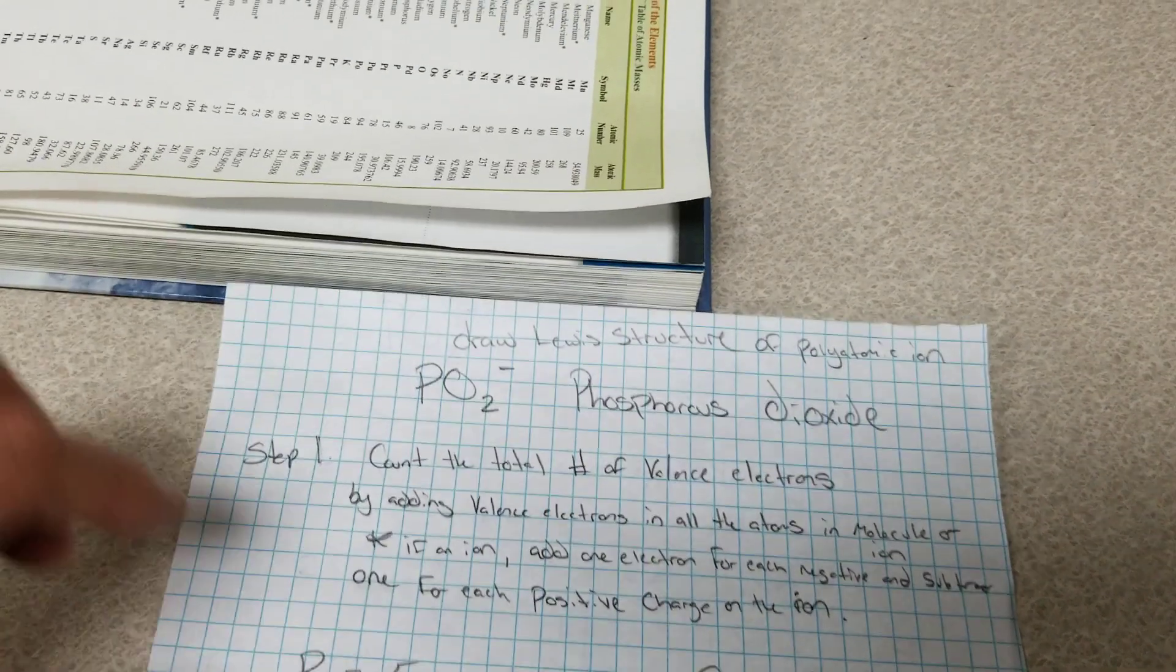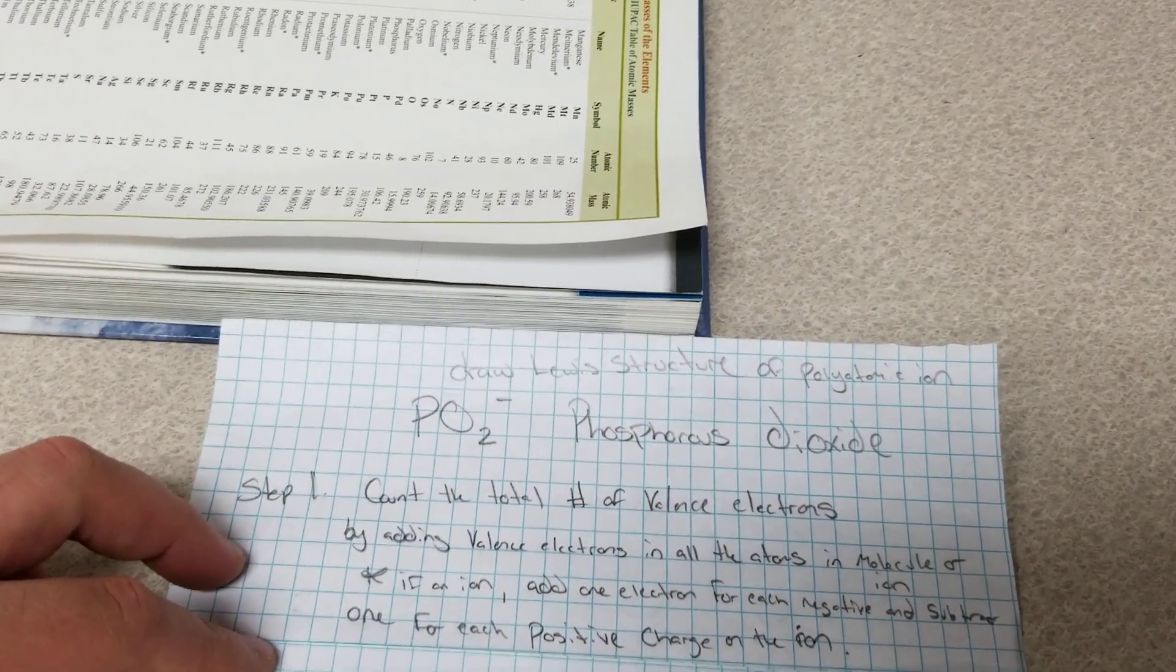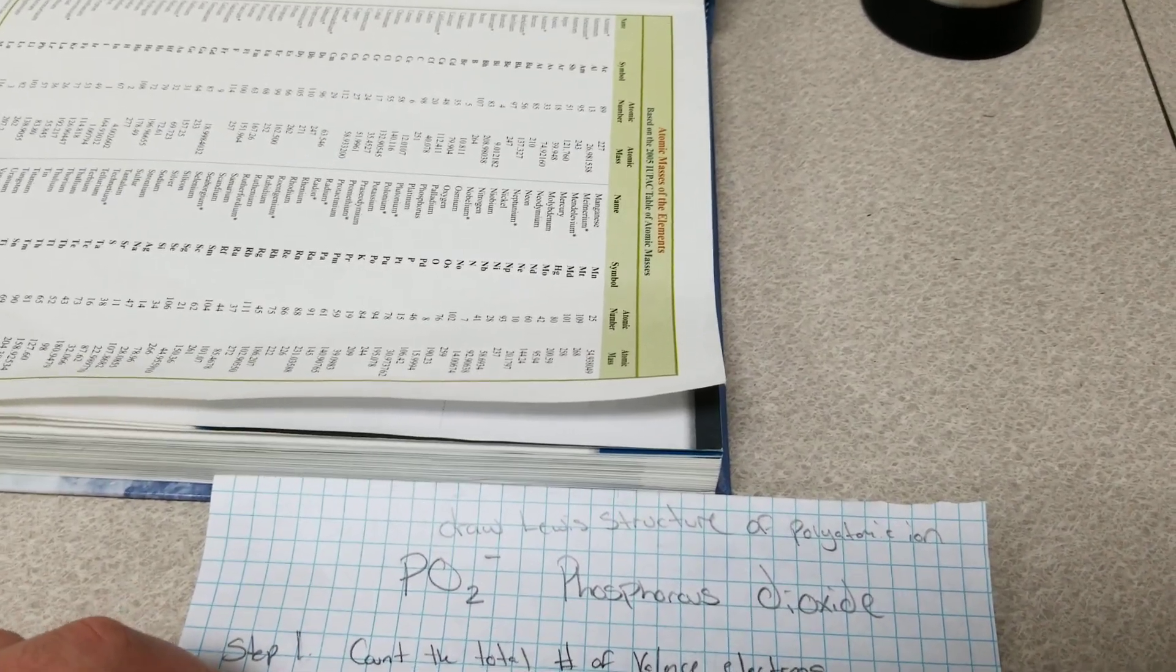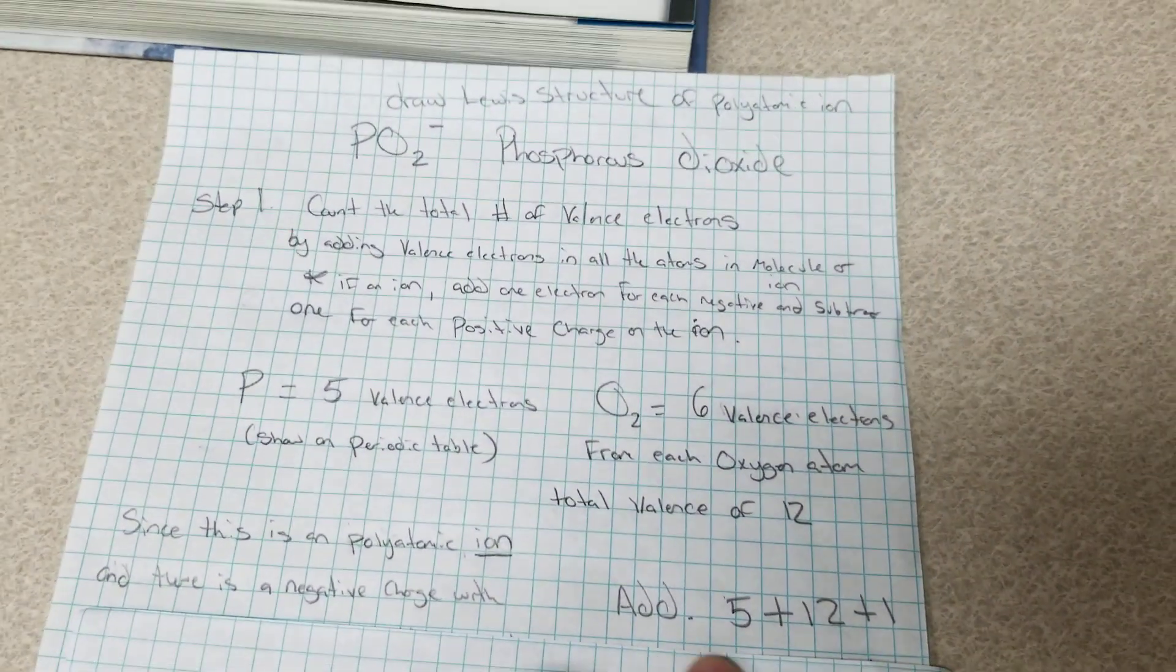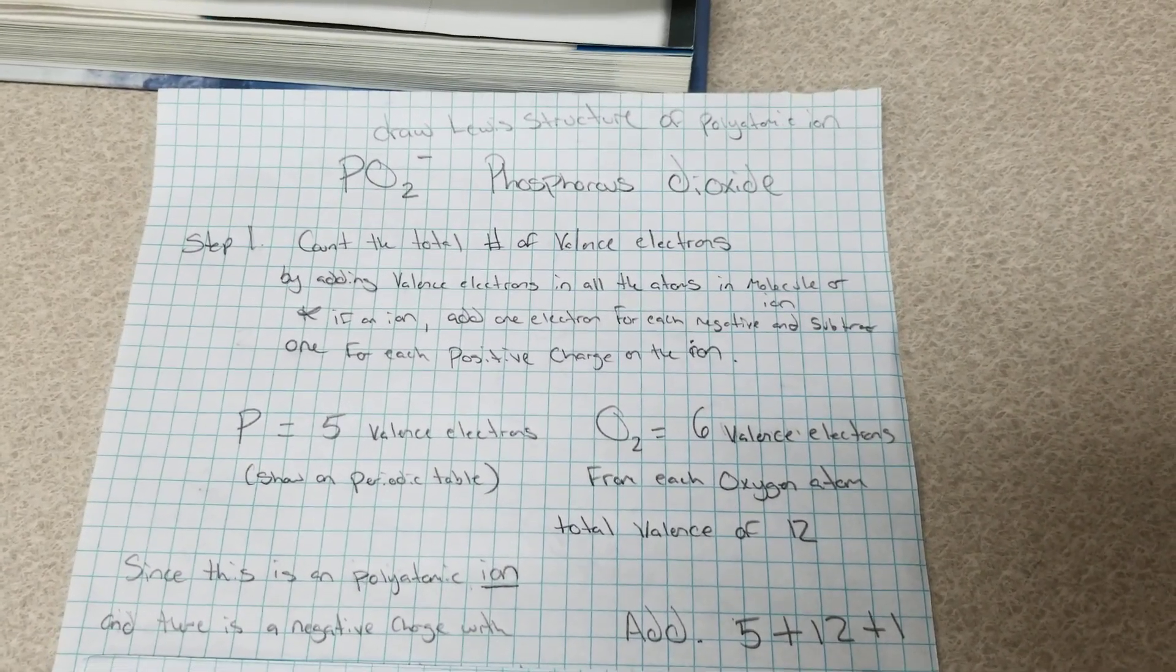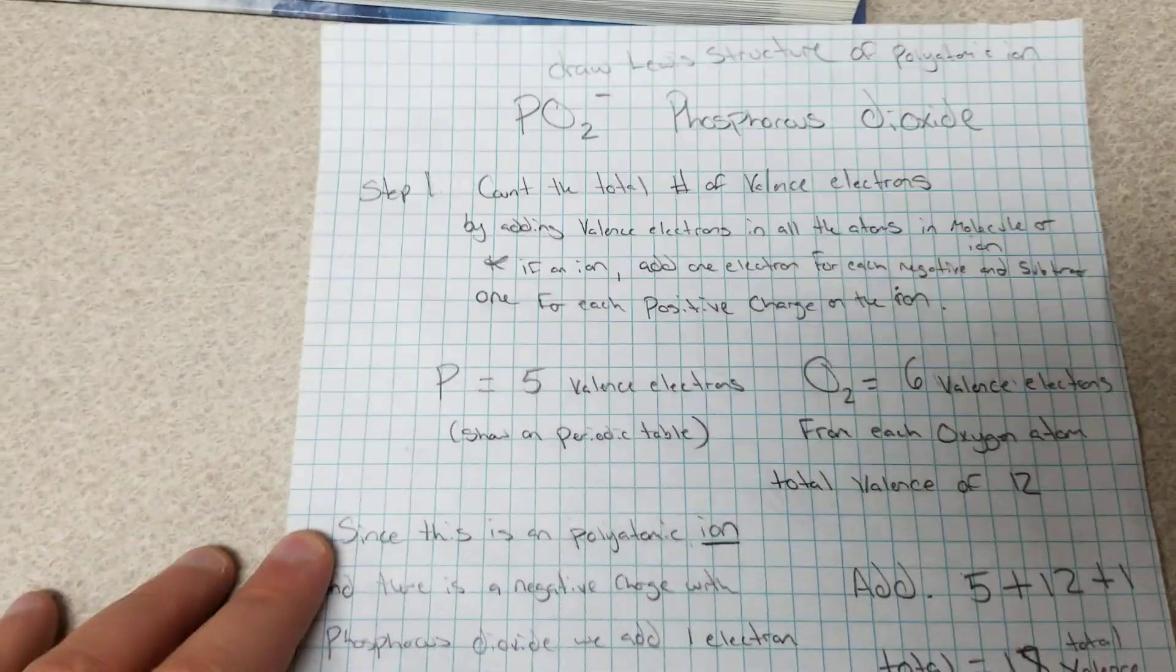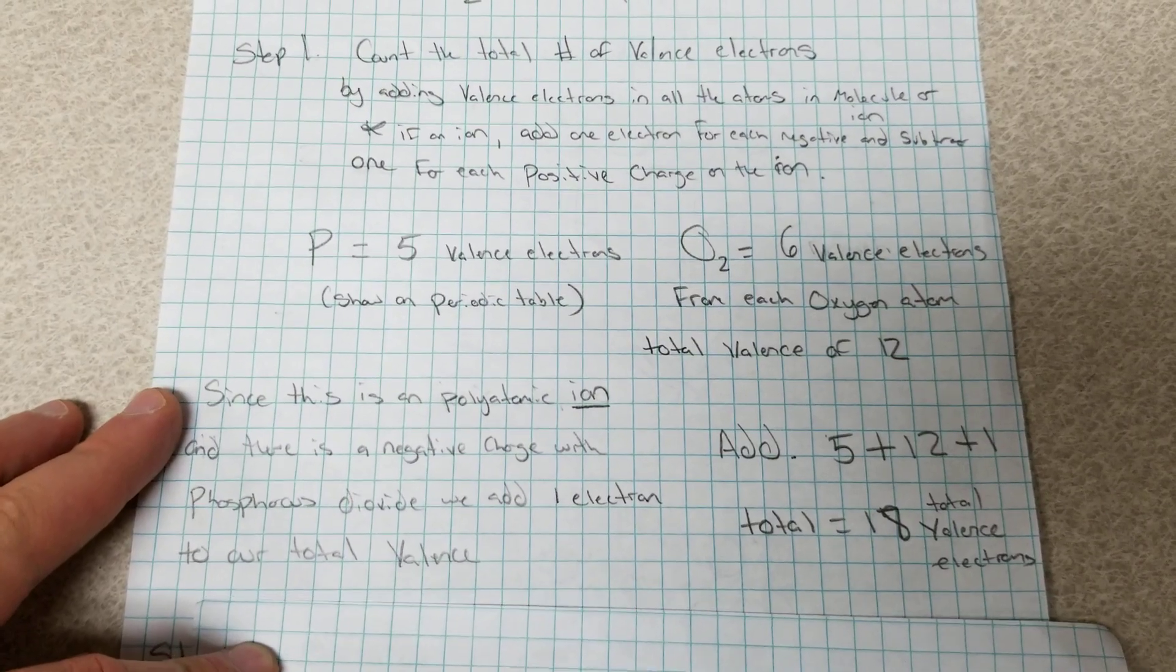And then back in step one we learned that if we have a polyatomic ion with a negative charge we have to add one electron. So we have five from the phosphorus, 12 from the oxygen, and then we add one from the electrical charge. And we have a total of 18 valence electrons.